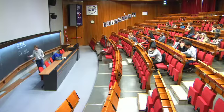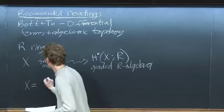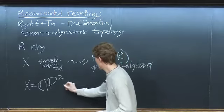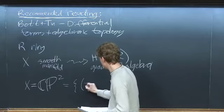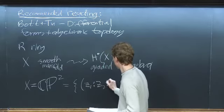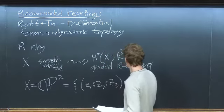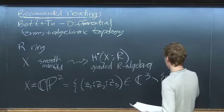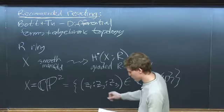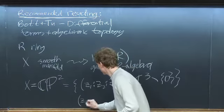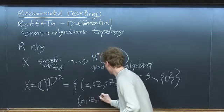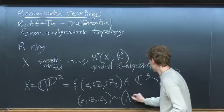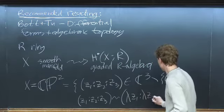So what I want to do is look at the case X equals CP². This is complex projective space — the set of all triples (z₁, z₂, z₃) in C³ minus 0, subject to the equivalence relation that (z₁, z₂, z₃) is equivalent to multiplying each entry by a nonzero complex scalar.